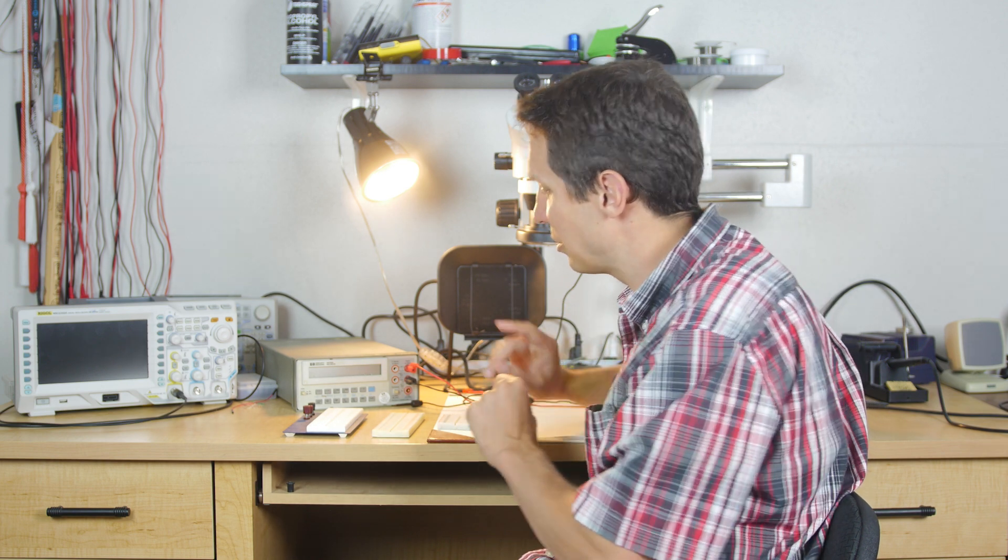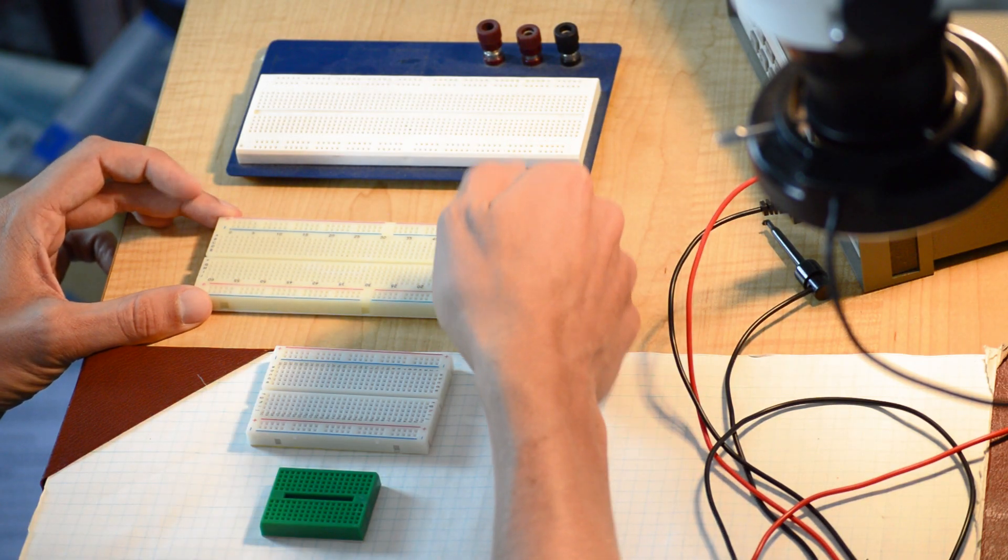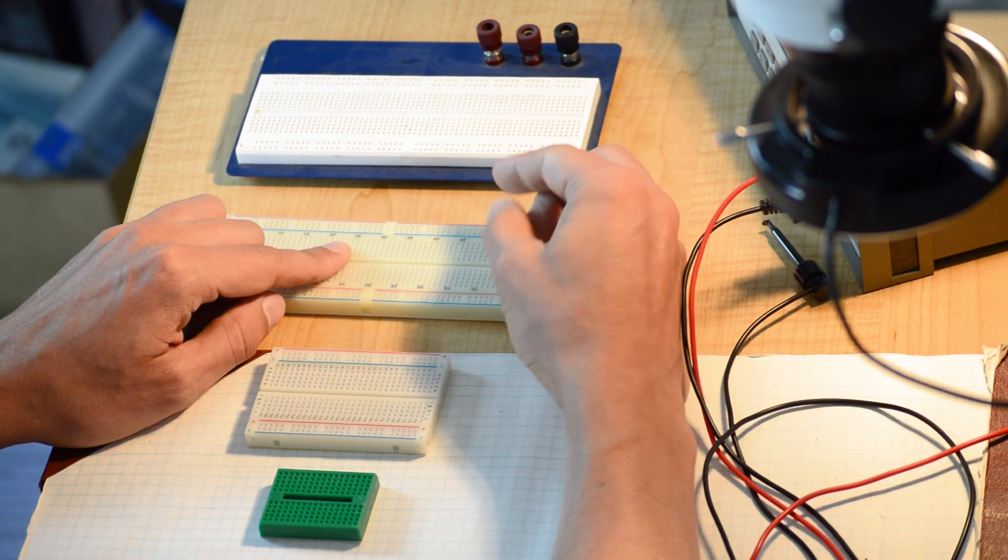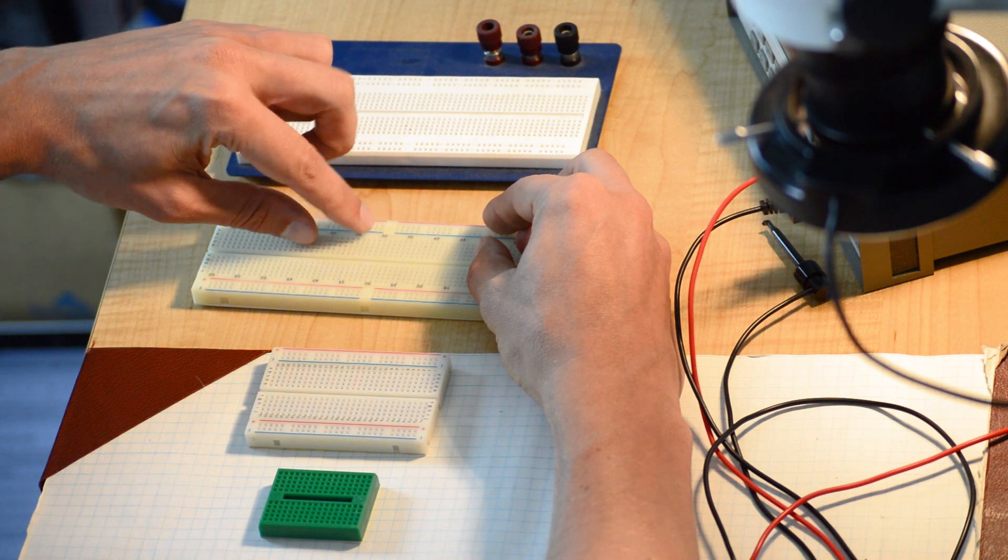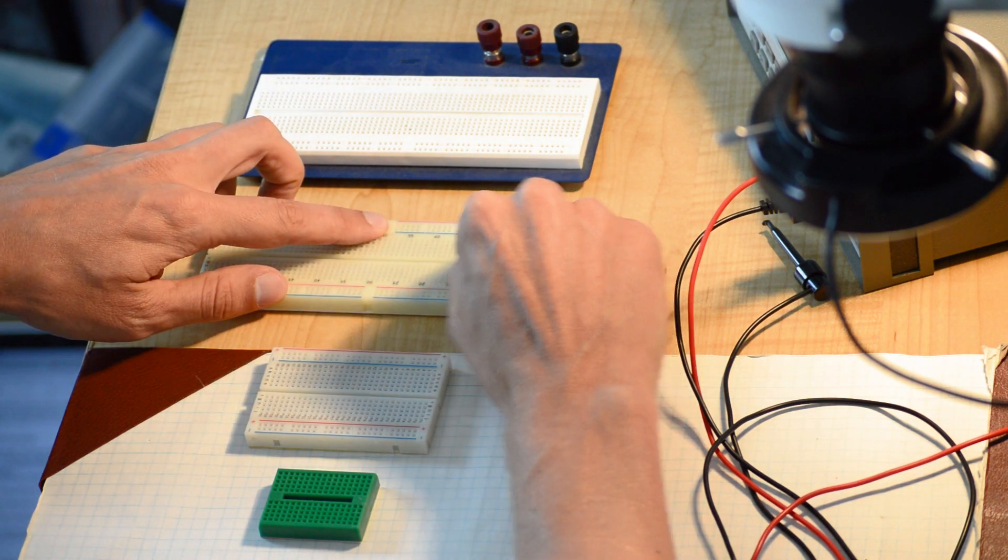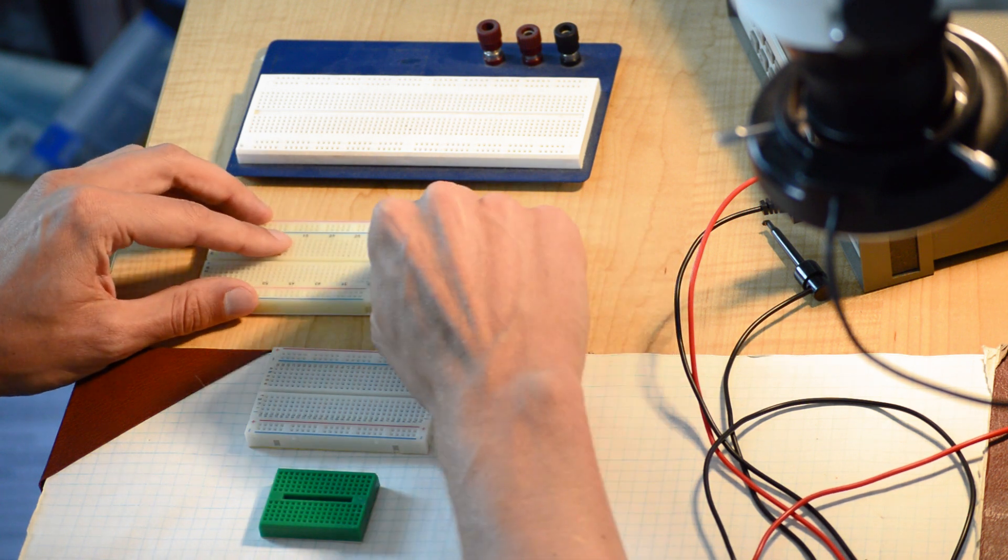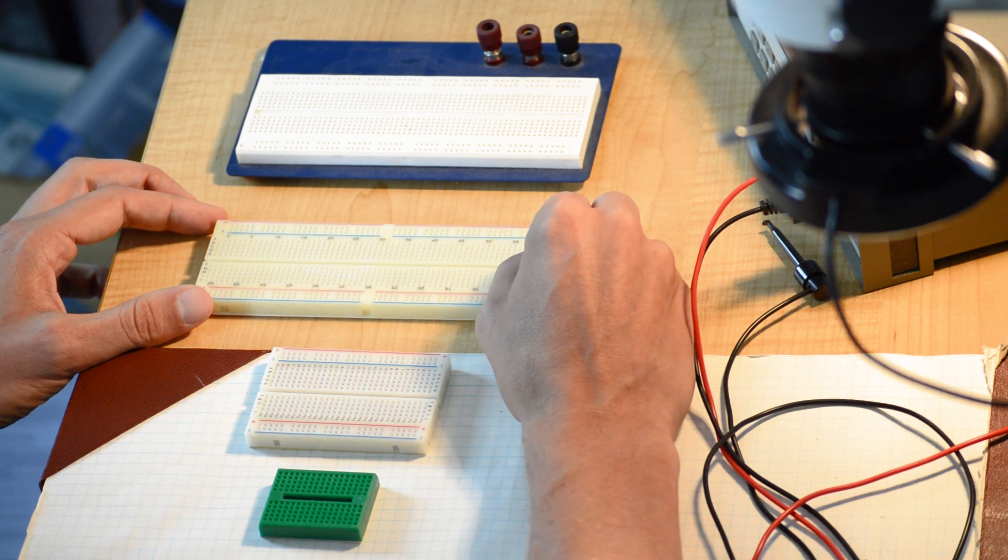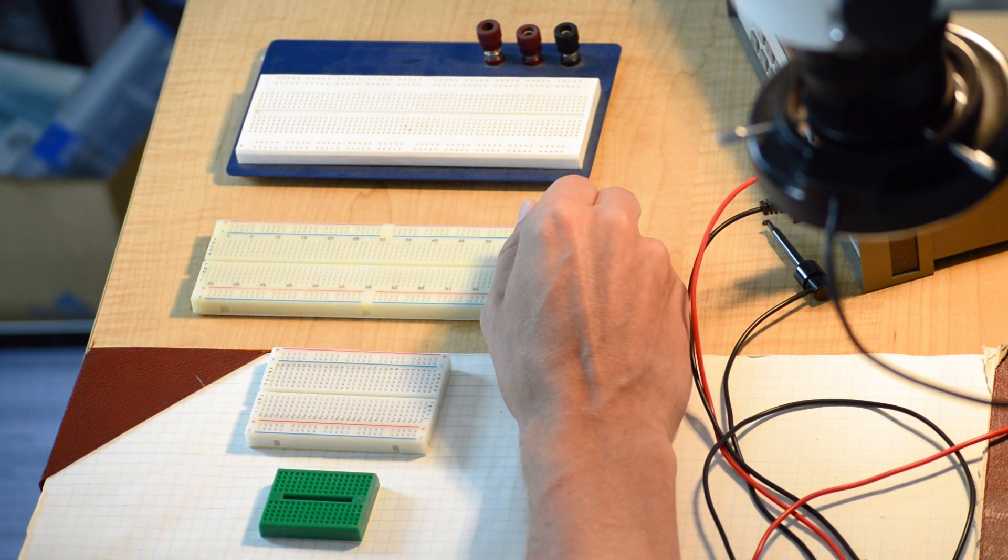One important thing to remember though is on the bigger one, these are actually split. So right here in the middle you'll notice there's a break in that line, the blue and the red. So all of these are connected and all of these are connected, but this is not connected to that.